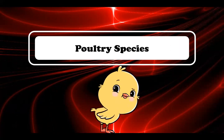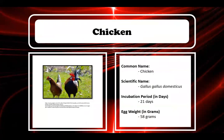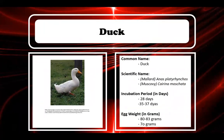Other characteristics of these species are presented here. Chicken: common name chicken, scientific name Gallus gallus domesticus, incubation period 21 days, egg weight 58 grams. Next, duck: common name duck.